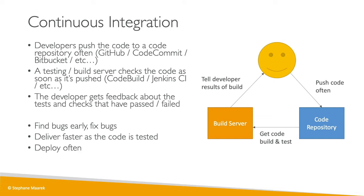The result of continuous integration is that you have happier developers as they're unblocked. They don't have to run their tests or builds themselves — they just push the code to a code repository, and then the build server does the heavy job of testing the code, building it, and notifying the developer of how it went.